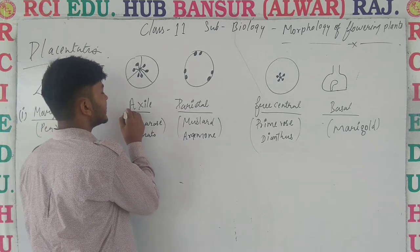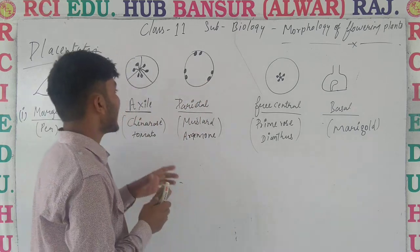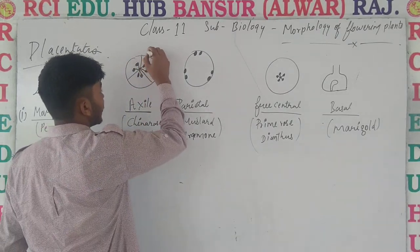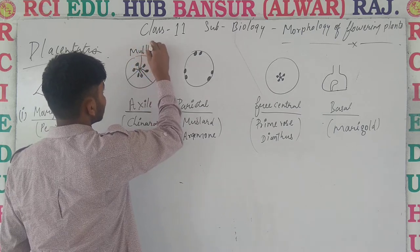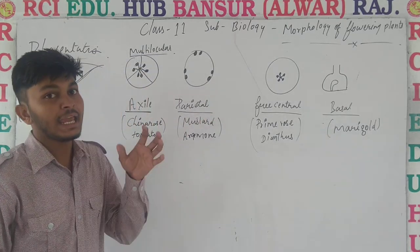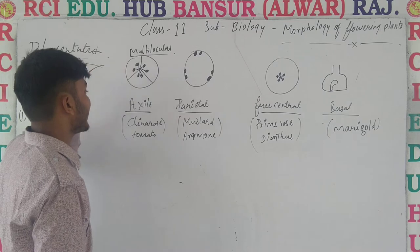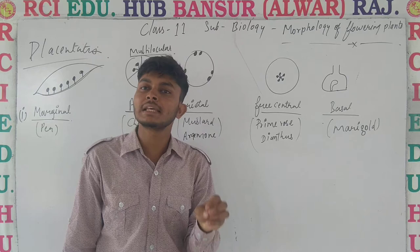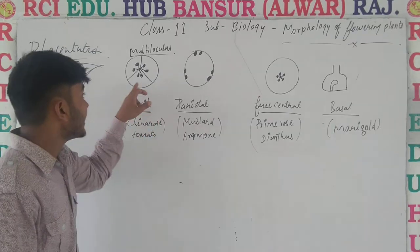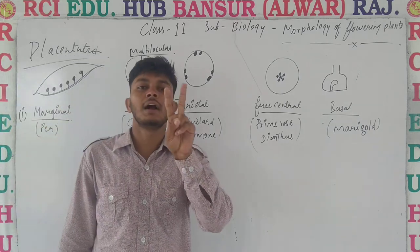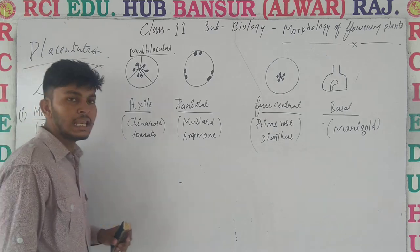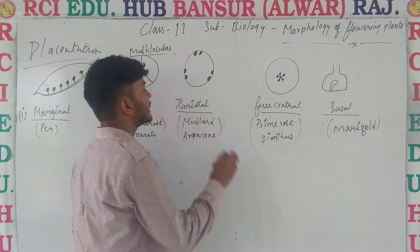Second type is axile placentation. ऐसा arrangement जिसके अंदर ovary के अंदर ovules axis पे पाई जा रहे हैं, but ovary कैसी है — multilocular. Multilocular का मतलब है कि ovary के अंदर एक से ज्यादा compartments या chambers पाई जा रहे हैं. In each locule there are two ovules. That kind of arrangement is known as axile placentation.